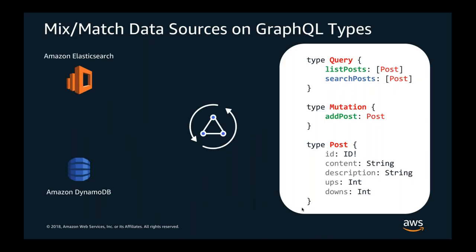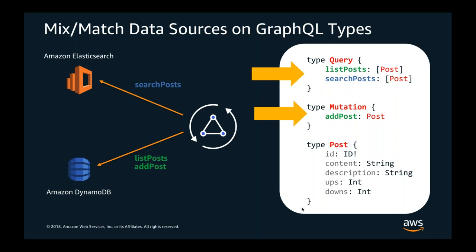With AppSync you can mix and match data sources on GraphQL types. Let's say we have DynamoDB and Elasticsearch in our backend — I can have a search query reading from Elasticsearch and a list query reading from DynamoDB. If I need to update data in DynamoDB, I can use a mutation. I can then use DynamoDB Streams hooked up to a Lambda function to keep DynamoDB synchronized with Elasticsearch. In this scenario, I have a very powerful, flexible, resilient, and scalable backend where clients can read, write, and perform full-text search on data very easily and quickly. Best of all, the whole backend is managed by AWS and you don't have to worry about any maintenance tasks.